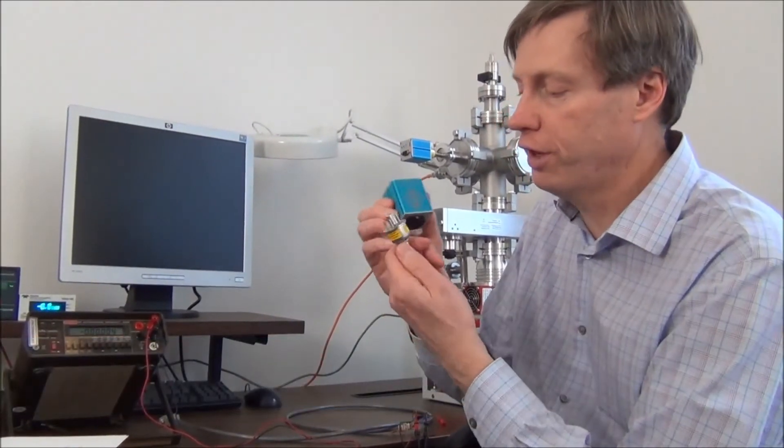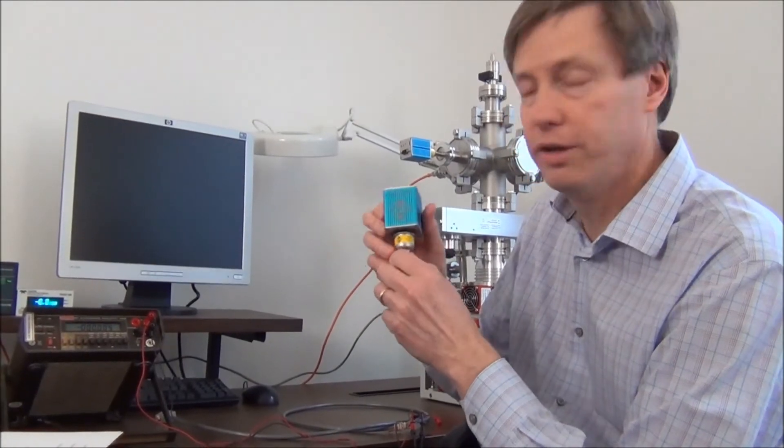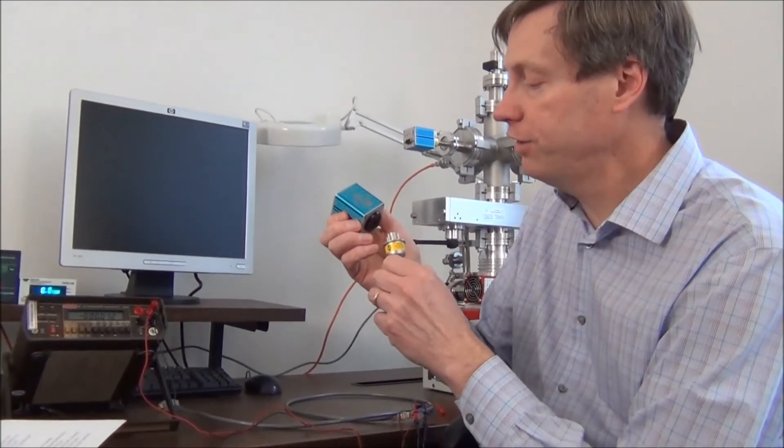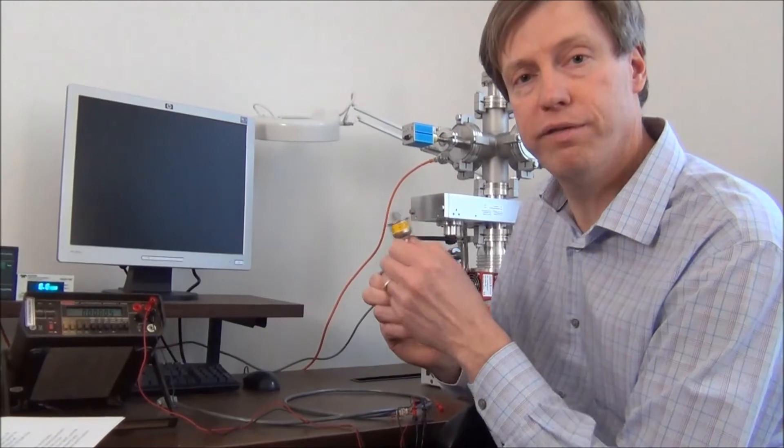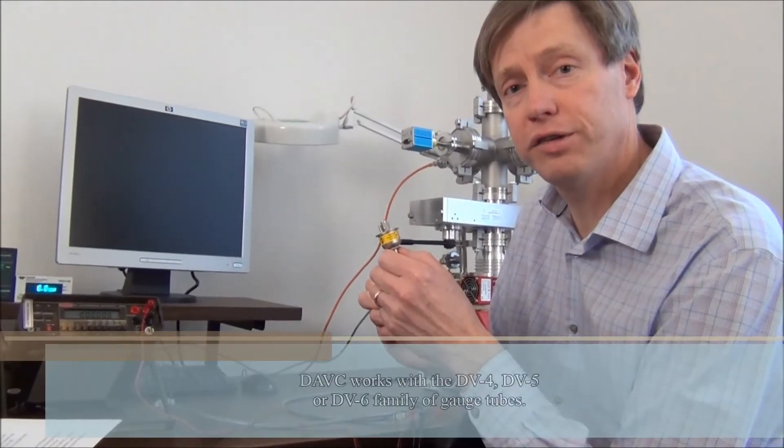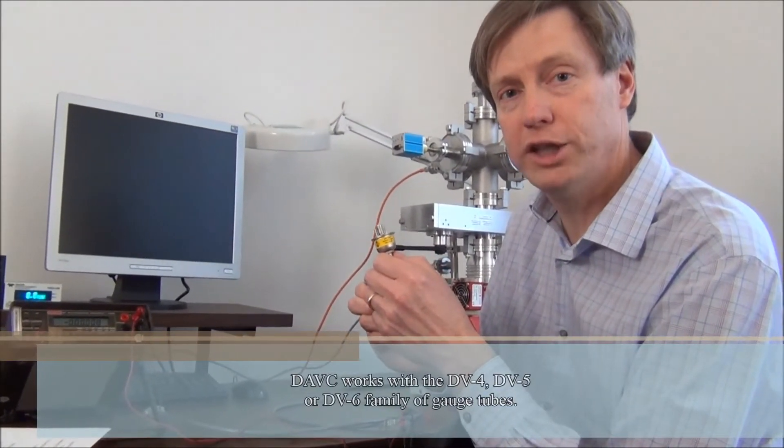This gauge just mounts onto one of our thermocouple gauge tubes like that. The DAVC can be configured to work with the DB4, DB5, or DB6 family of thermocouple gauge tubes.